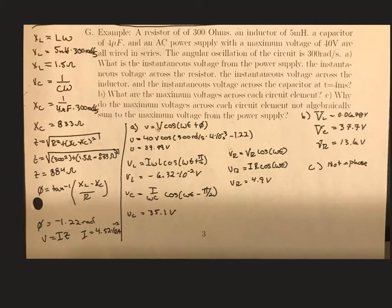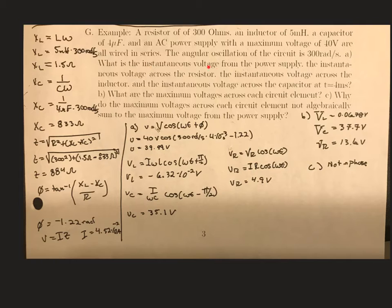In this example problem, we have a resistor, an inductor, and a capacitor wired in series with an AC power supply. We're given the max voltage and the angular oscillation of the circuit — you have to be careful whether you're given the frequency or the angular oscillation. The first thing we want to find is the instantaneous voltage from the power supply, across the resistor, across the inductor, and across the capacitor at 4 milliseconds.